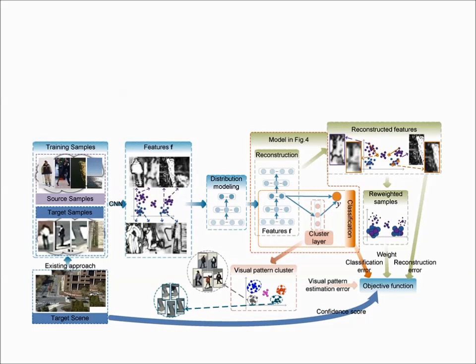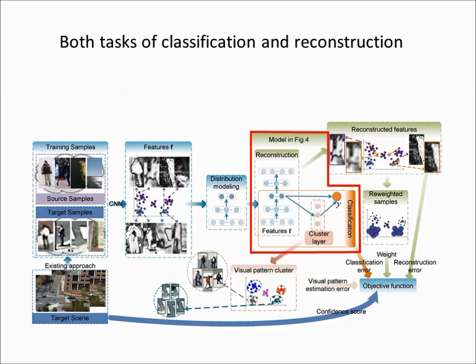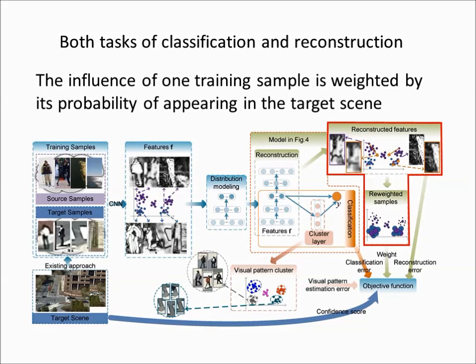Our specifically designed objective function not only incorporates the confident scores of target training samples, but also automatically weights the importance of source training samples by fitting the marginal distribution of target samples.